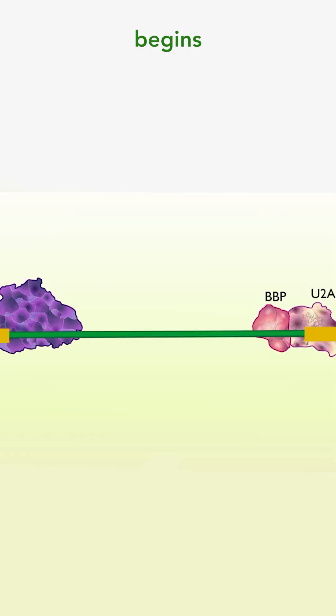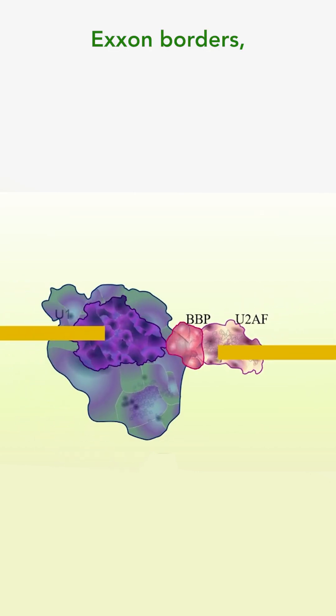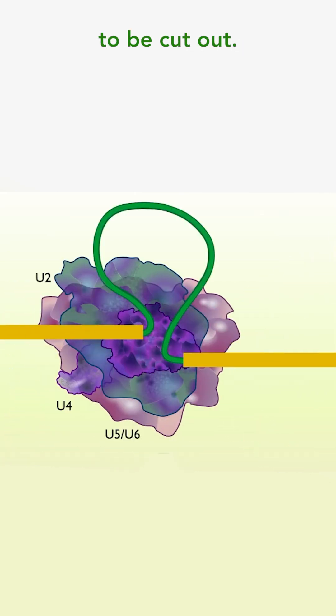RNA splicing begins with assembly of helper proteins at the intron-exon borders, defining the section of DNA to be cut out.